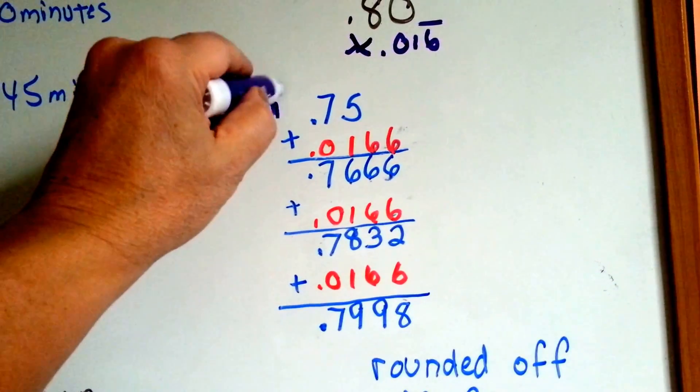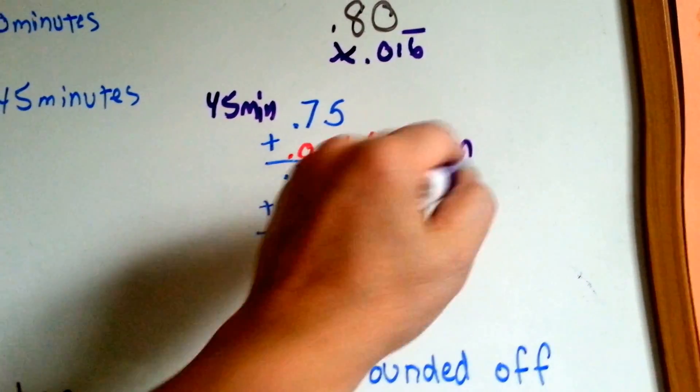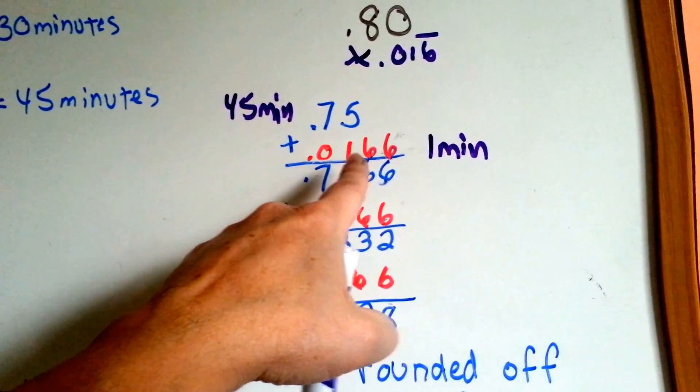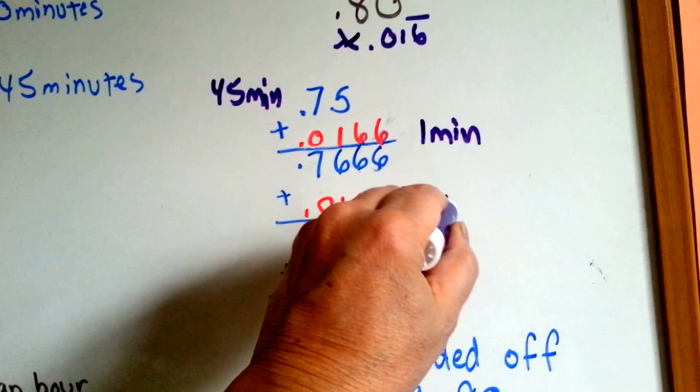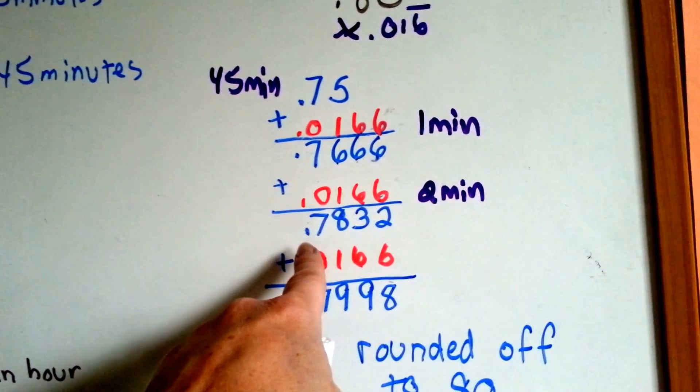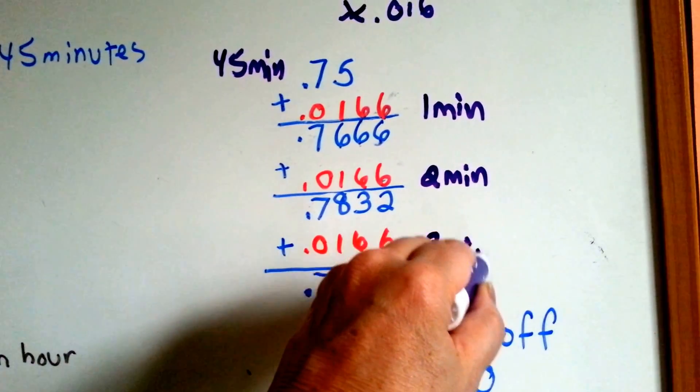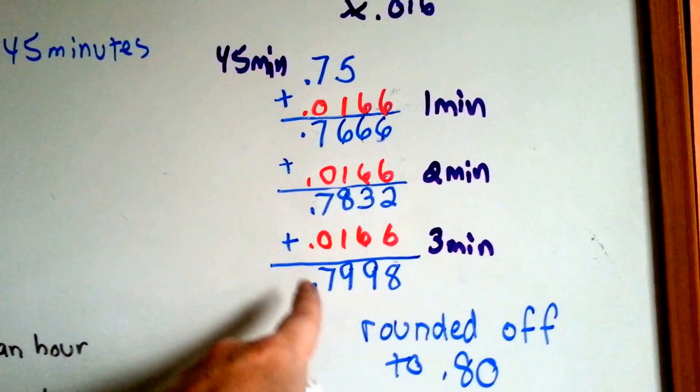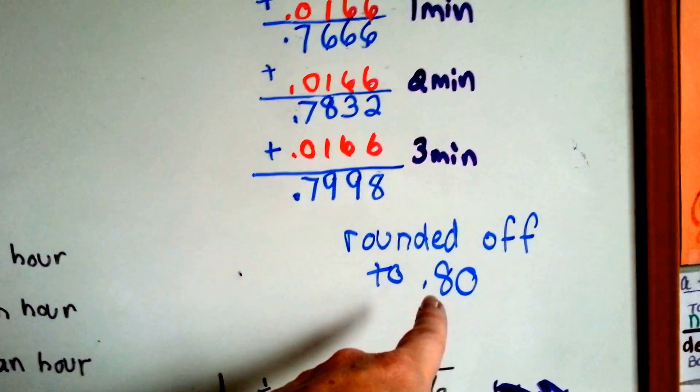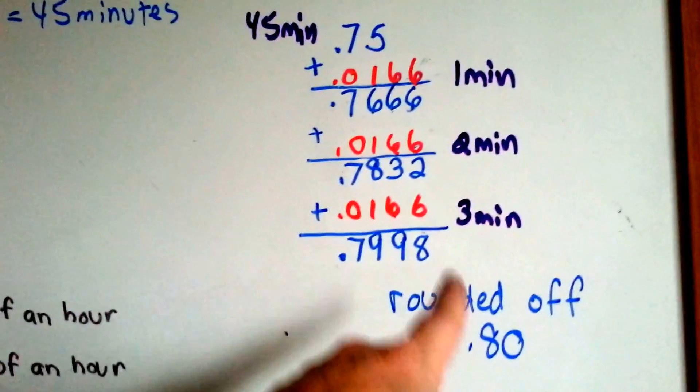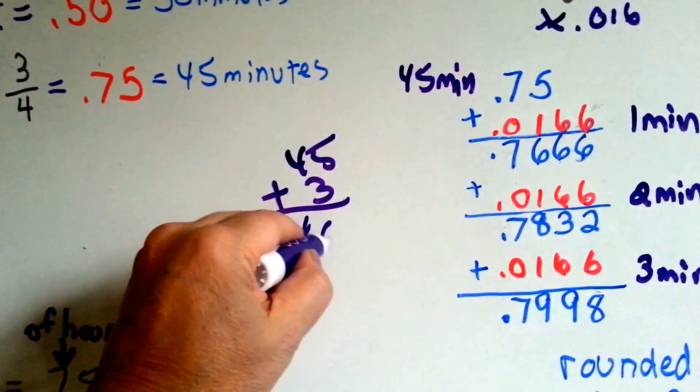So we're going to take .75. That's 45 minutes. We're going to add one minute to it, .0166, and we're going to get .7666. Let's add another minute. Now we're at two minutes. You add it up and it comes to .7832. Let's add another minute. Now we're at three minutes that we've added. That comes to .7998, and to round it off, your boss is being nice, rounding it off to eight. So that's 45 minutes and three minutes.